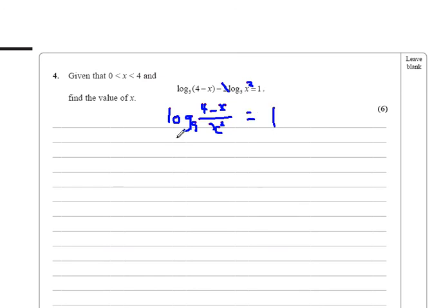Unlog both sides, which is 5 to the power of both sides. That gets rid of the logarithm from this side, and makes this 5 to the power of 1. Then bring the x squared up here. We get 4 minus x equals 5x squared, which then simplifies to make 5x squared plus x minus 4 equals 0.